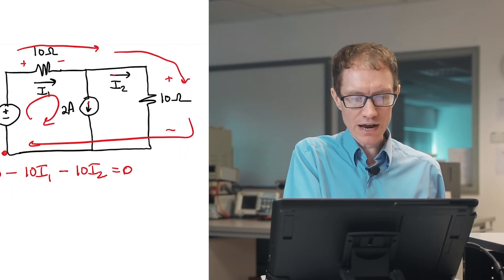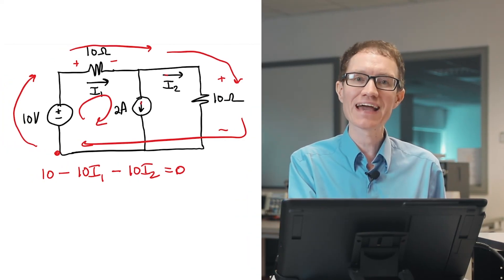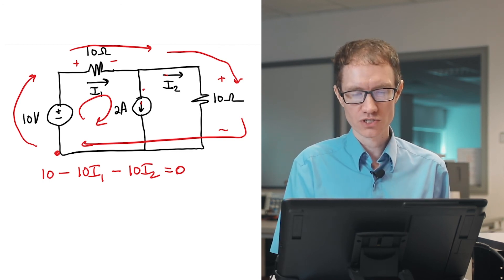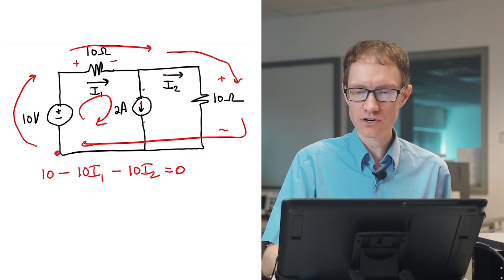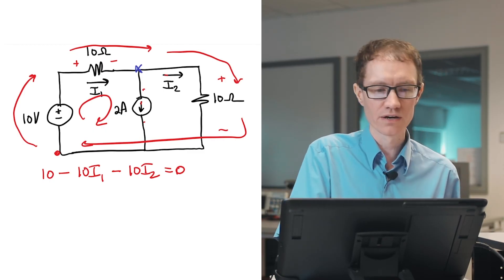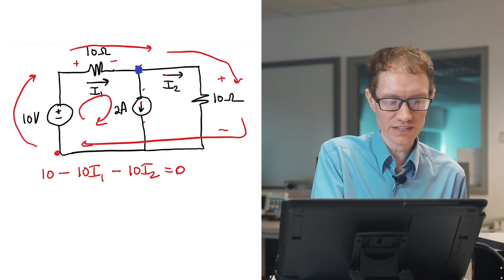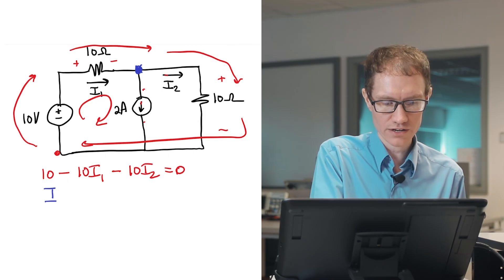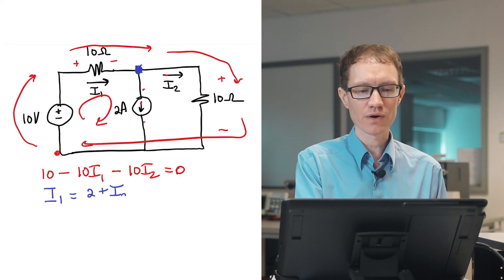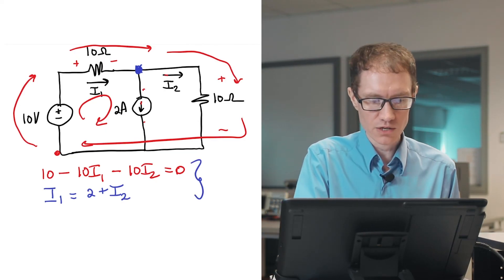We have two variables, so I'm going to need another equation in order to solve it. I'm not going to gain anything by using the Kirchhoff voltage law across this current source, so I'm left with the Kirchhoff current law. Let's go ahead and apply it at this node right here. I can say current in equals current out. So current in is I1 and current out is two amperes plus I2. Now I have two equations and two unknowns, and I can solve these simultaneous equations.